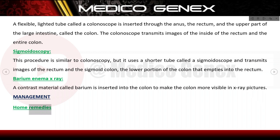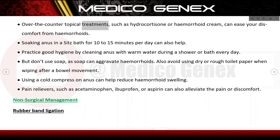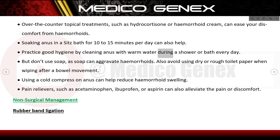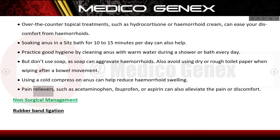Home remedies include over-the-counter topical treatments such as hydrocortisone or haemorrhoid cream to ease discomfort. Soaking the anus in a sitz bath for 10 to 15 minutes per day can also help. Practice good hygiene by cleaning the anus with warm water during a shower or bath daily, but avoid soap as it can aggravate haemorrhoids. Avoid dry or rough toilet paper. Using a cold compress can help reduce swelling, and pain relievers such as acetaminophen, ibuprofen, or aspirin can alleviate pain.